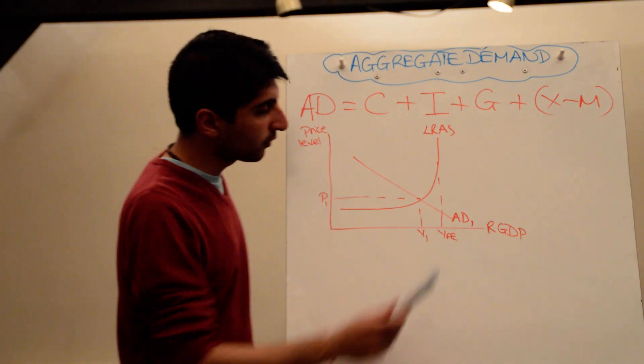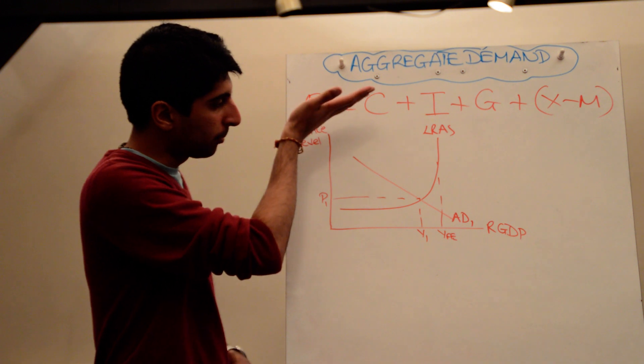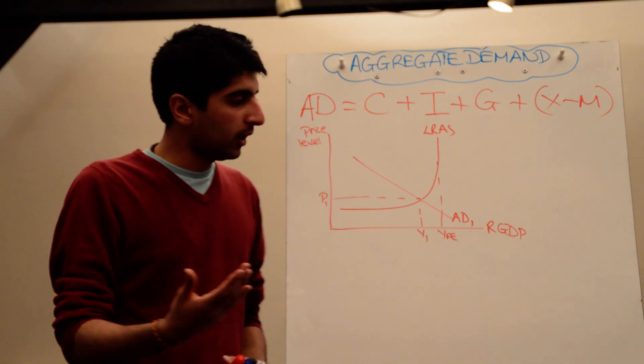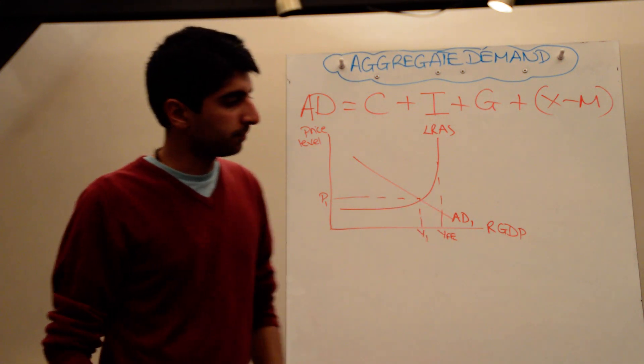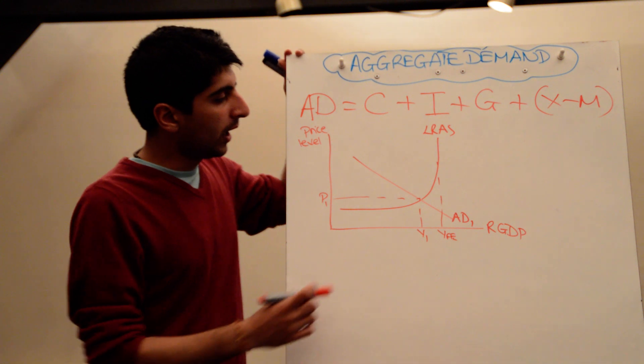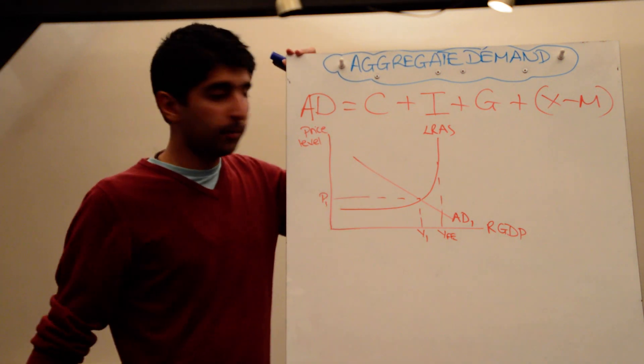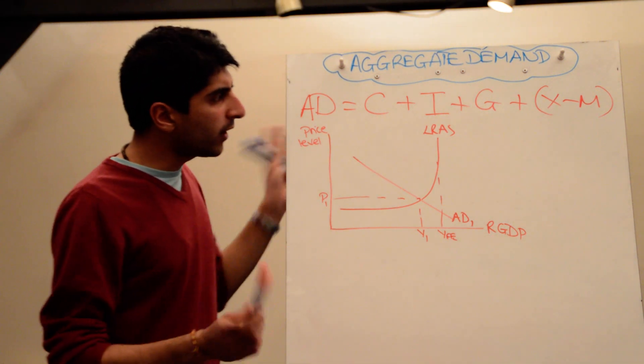Aggregate demand is downward sloping because of the wealth effect. When the price level falls, inflation in the economy falls, people feel wealthier, which means they're more likely to spend and therefore increase growth. Downward sloping aggregate demand. Macroeconomic equilibrium is where AD equals AS, so that gives you P1 and Y1.